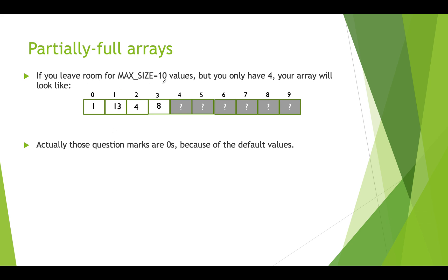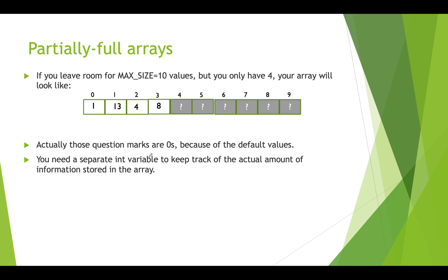In this picture we have an array that can hold 10 integers with four real values in the first four slots. Those question marks are actually zeros — the default int value — but they're not zeros we put in on purpose. We'll use a separate int variable to keep track of how much information we've actually put into the array. We'll call that variable 'size', and size will hold four. Interestingly, four also happens to be the index of the next empty slot, so we double-use this variable.